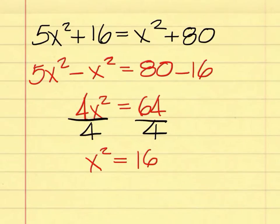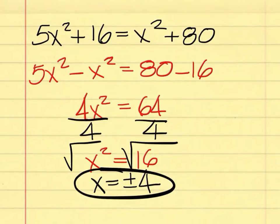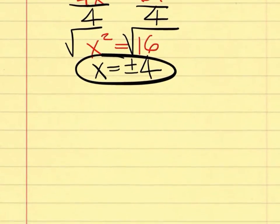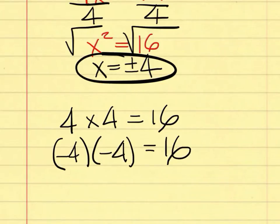What must I do to both sides now, Bailey? Find the square root. Yes. So we'll put it in right here. What is the square root of x squared, Perry? What is the square root of 16, Salyers? It is not 4. What's the square root of 16, Johnson? Plus or minus 4. Yes, and this is your solution. Because 4 times 4 is indeed 16, but negative 4 times negative 4 is also positive 16. So that's why it must be plus or minus 4 as the square root of 16.